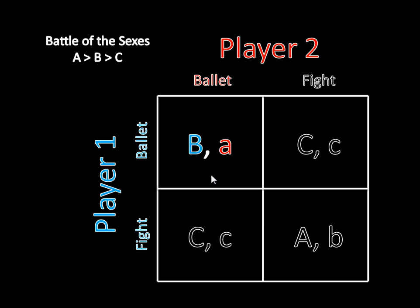Now let's check Fight-Fight. If Player 2 is expecting Player 1 to play Fight, does she want to deviate? The answer is no, because she earns B from going to the Fight. She would get C if she switched to Ballet. B is greater than C, so Player 2 does not have a profitable deviation from Fighting. On Player 1's end, he earns A for going to the Fight, and if he switched to Ballet, he would earn C instead. A is greater than C, so Player 1 does not have a profitable deviation. Fight-Fight is mutually optimal — that's a pure strategy Nash equilibrium.